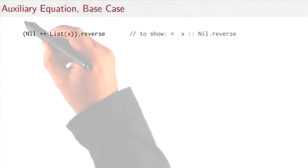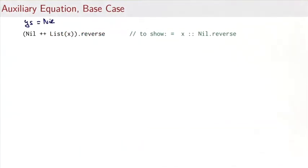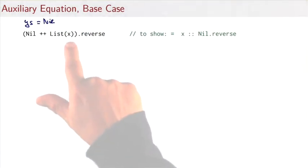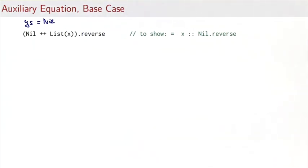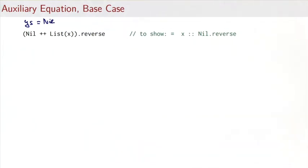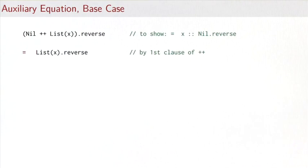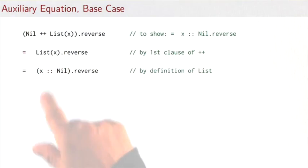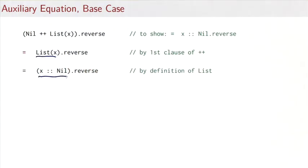For the base case where ys equals nil, we want to show that (nil followed by x).reverse equals x followed by nil.reverse. By the first clause of ++, nil is a left unit, so the left-hand side simplifies to (list of x).reverse. Then list of x expands to x followed by nil.